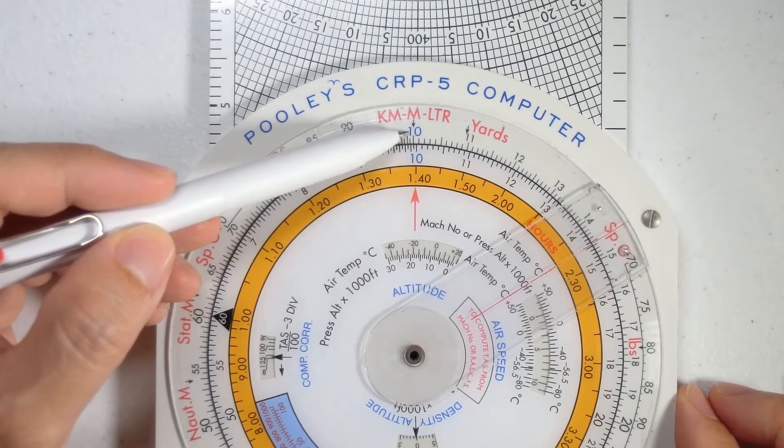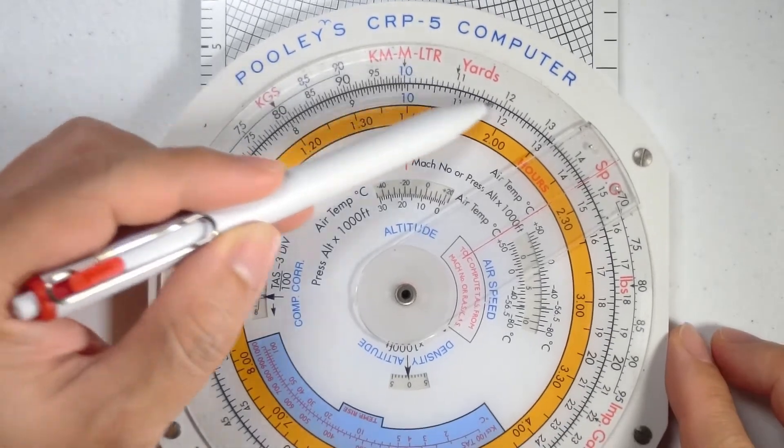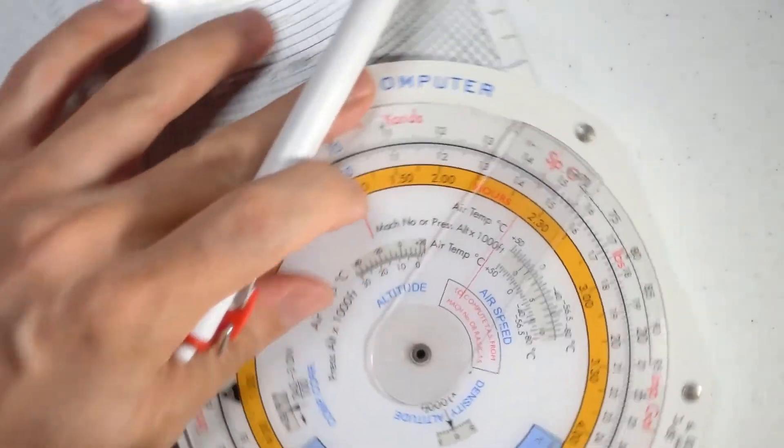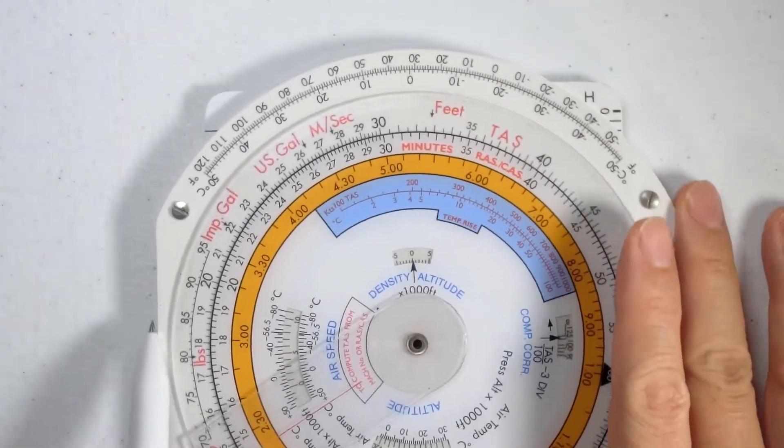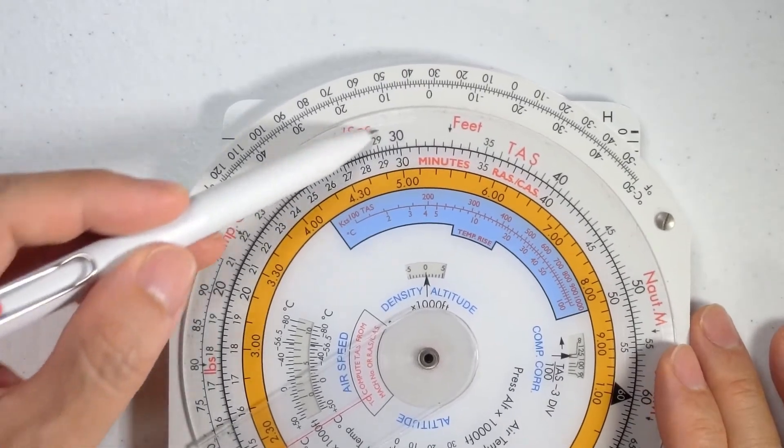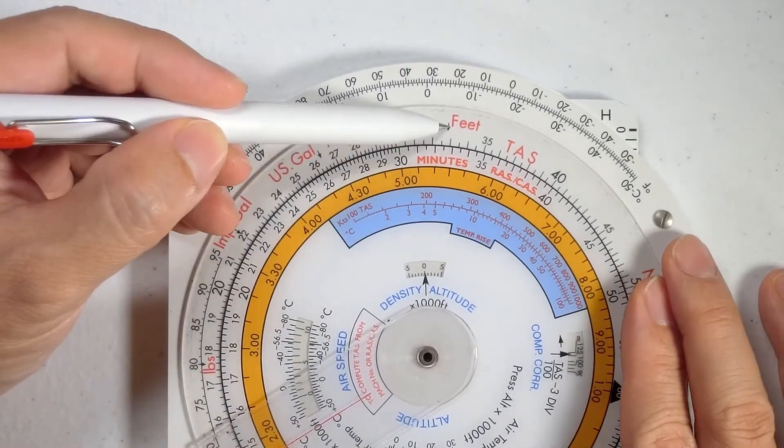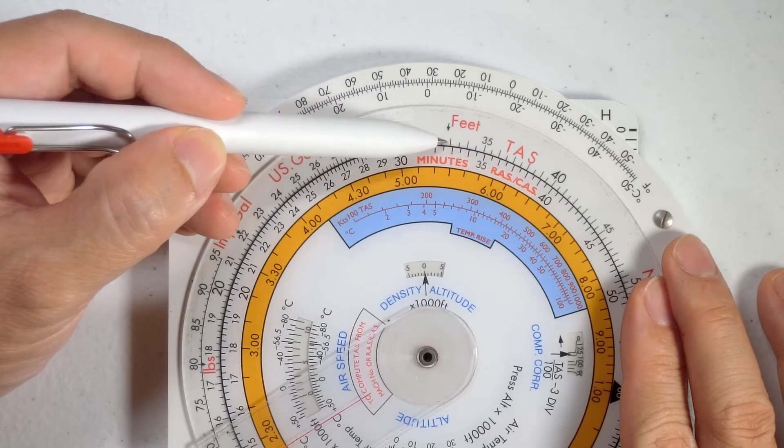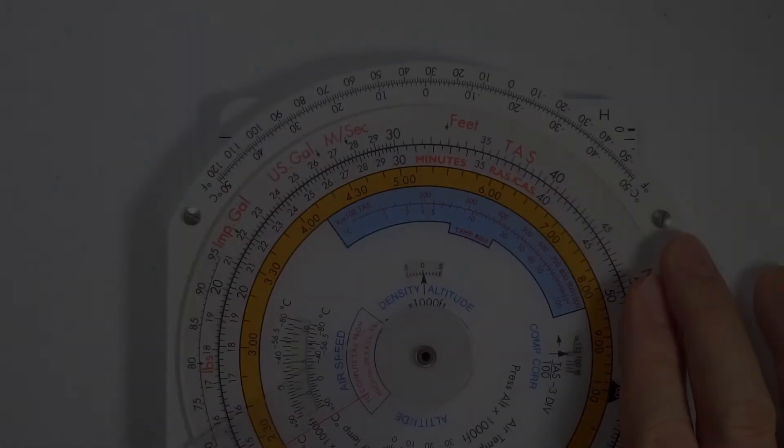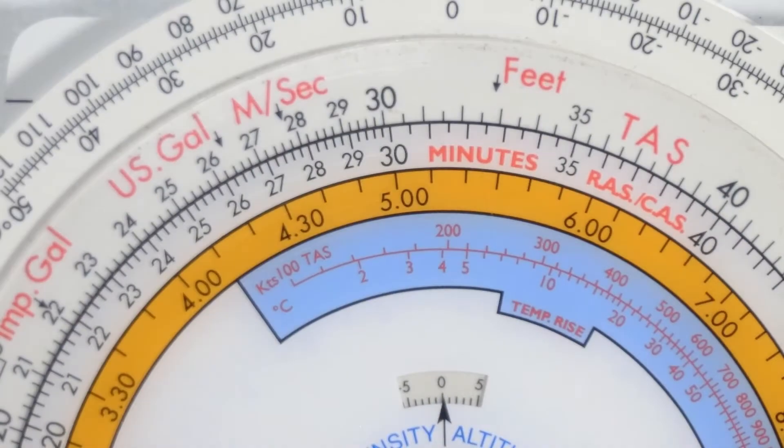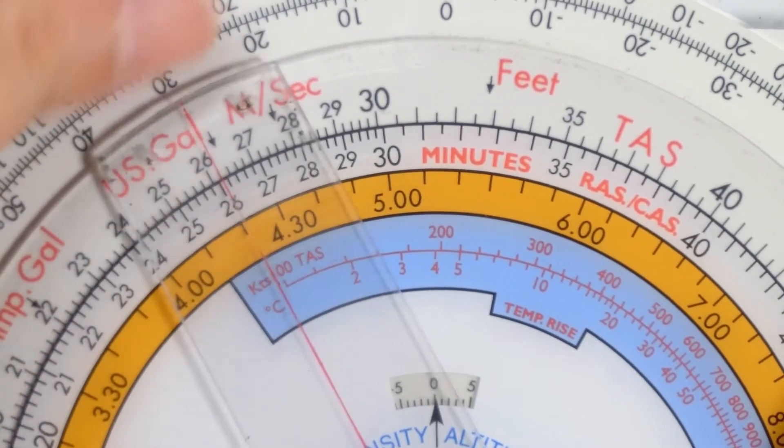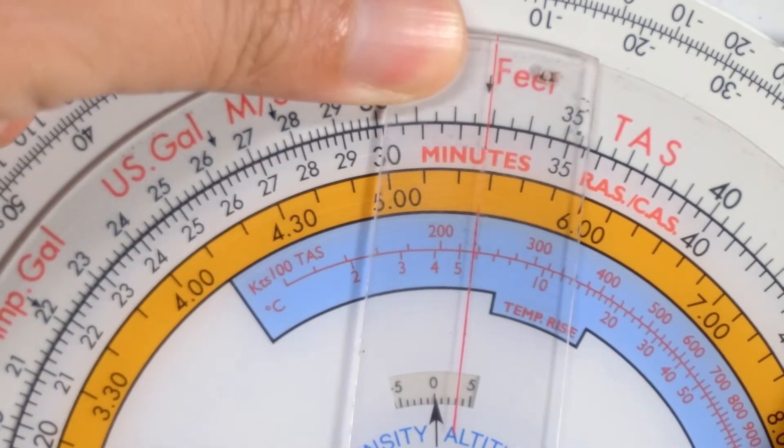So one meter is equivalent to, and if I were to rotate the CRP-5 and look at the outer scale, you'll find that corresponding with the feet arrow. I'm going to zoom in a little bit and move the cursor so that the cursor lines up with the feet arrow.